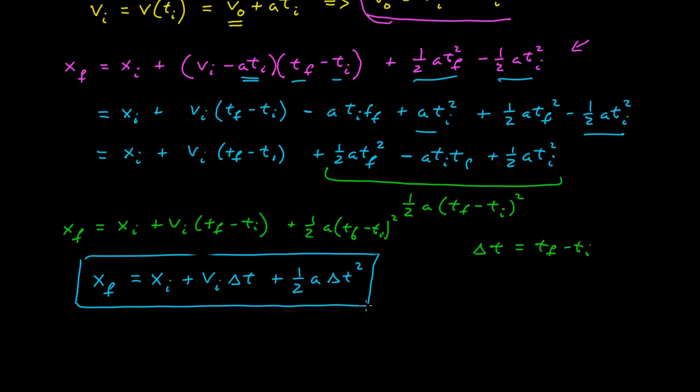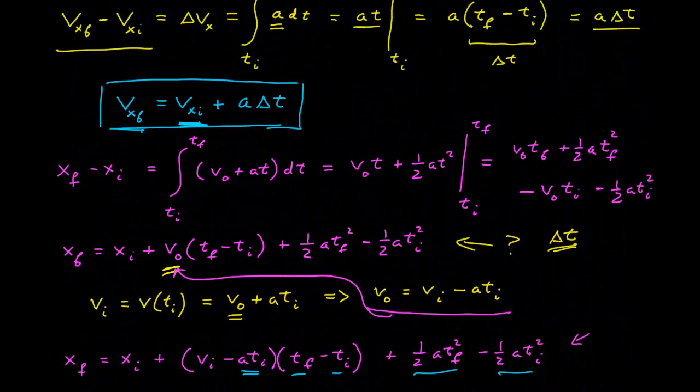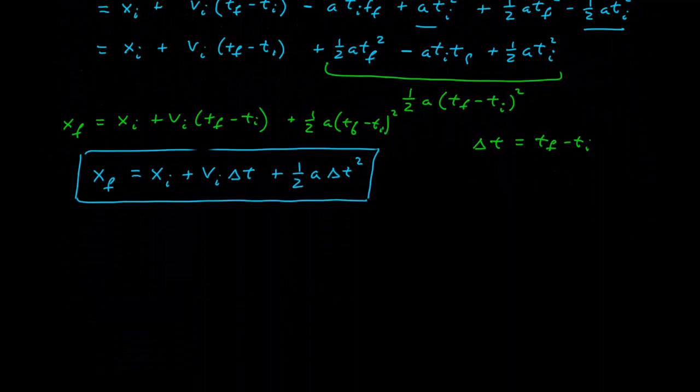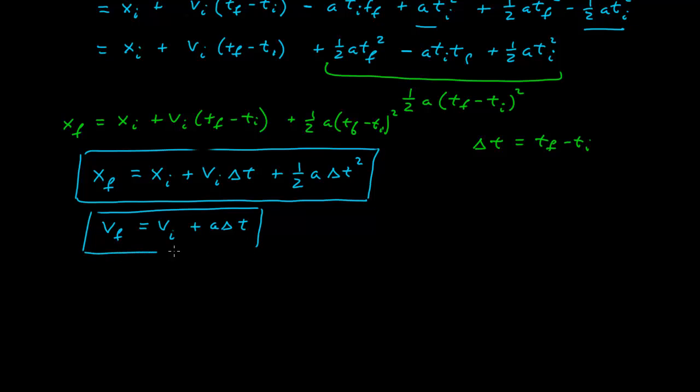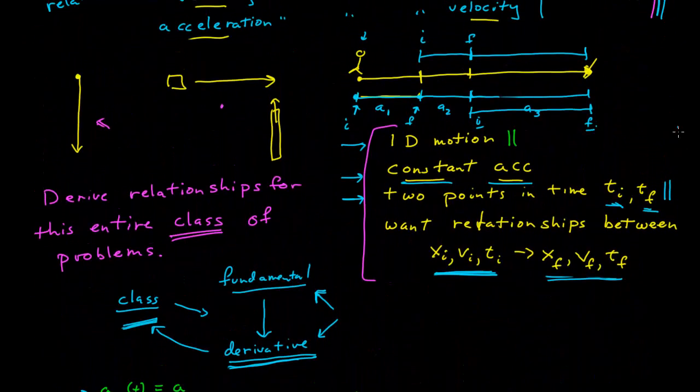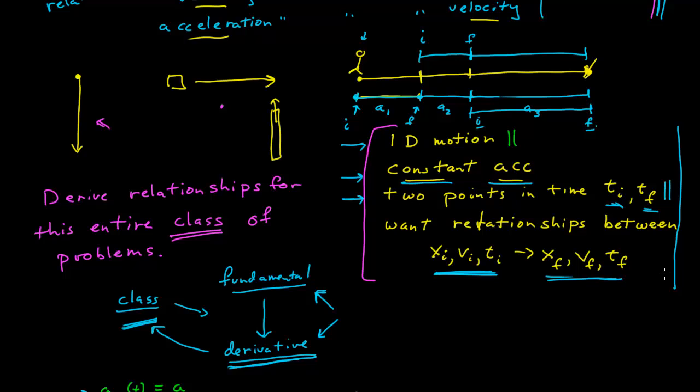And so we arrive at x f equals x i plus v i t f minus t i plus one-half A t f minus t i squared. And again, I might find it convenient delta t equals t f minus t i, and now I have, finally, my final position is equal to my initial position plus my initial velocity times the time interval, plus one-half the acceleration times the time interval squared. And so was this really all worth it? I mean, I could have just written that down since I knew what the answer was. Here's my combination. I'll get this down here, too.